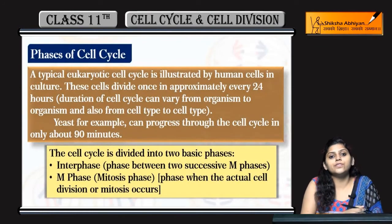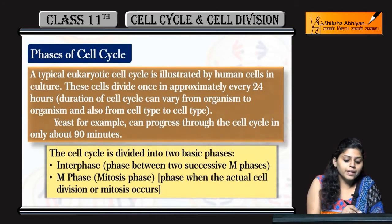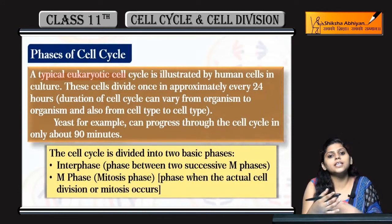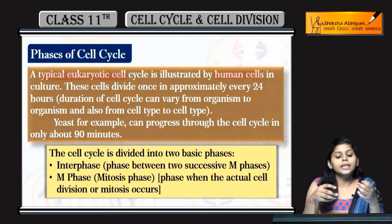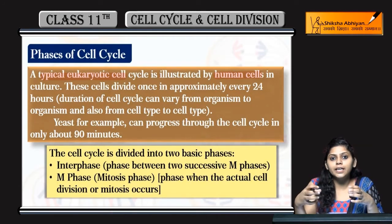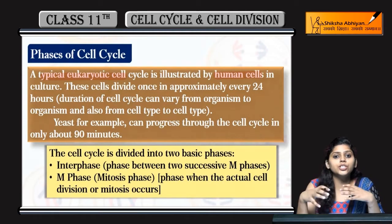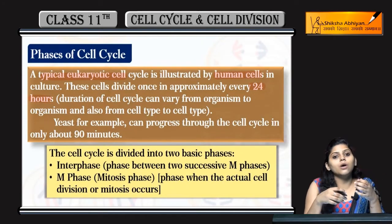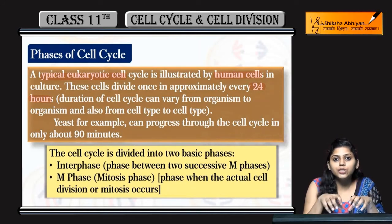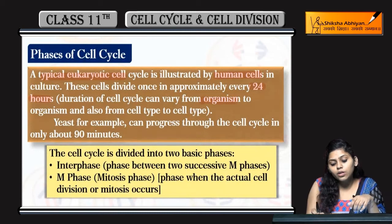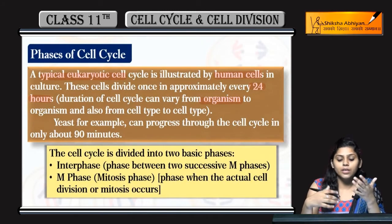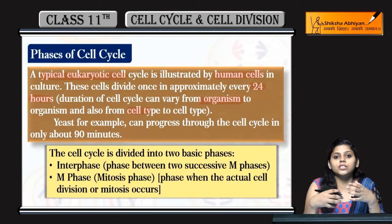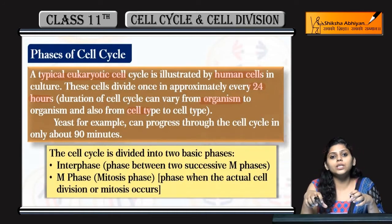Next is phases of cell cycle. In a typical eukaryotic cell, for example a human cell, the cell cycle is approximately 24 hours. This duration depends upon organism to organism — different organisms have different cell cycle durations.